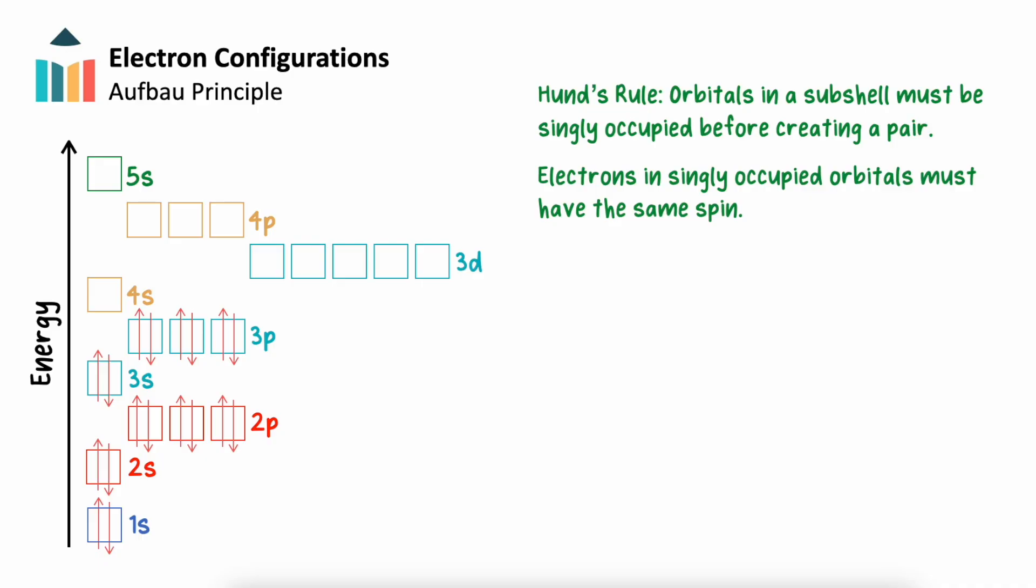While electrons can enter the same orbital if they have opposite spin, this is not usually the most stable configuration. Consider electrons filling into the 3P sublevel. When two electrons are paired within the same orbital, they repel each other electrostatically.